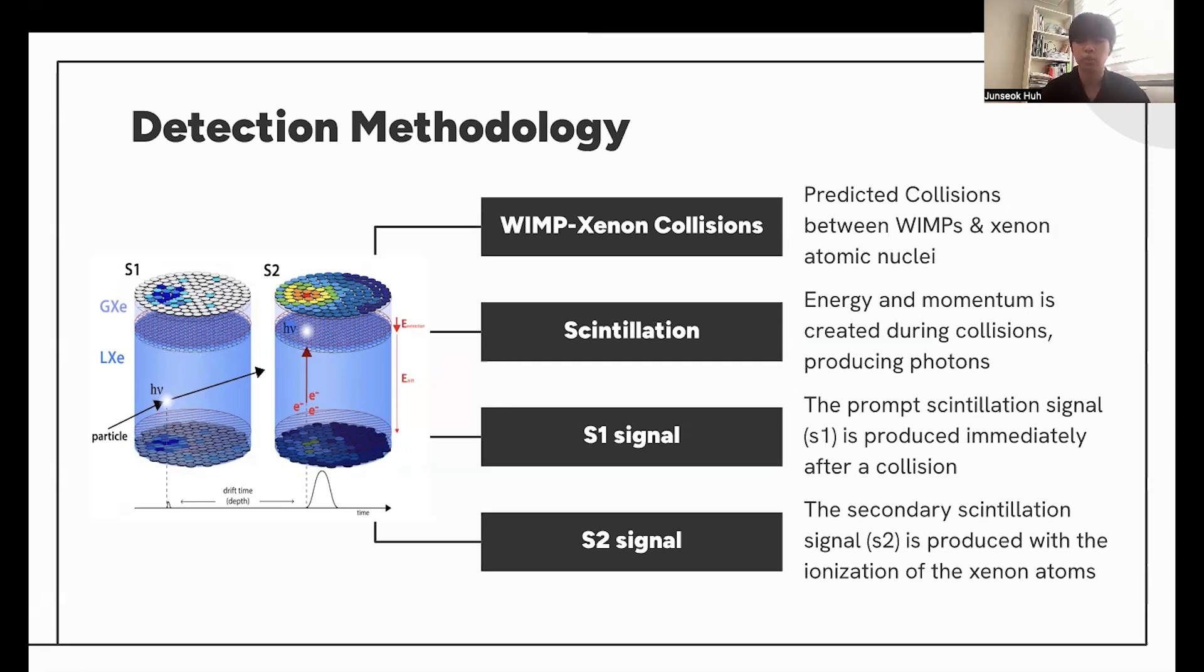The prompt scintillation signal, S1, is produced immediately after the collision, during the excitation of Xenon atoms and their electrons.